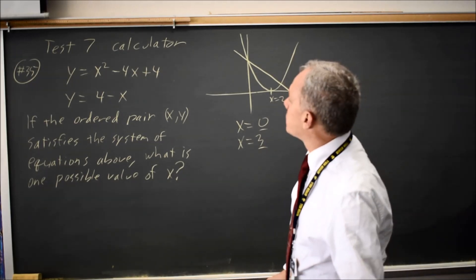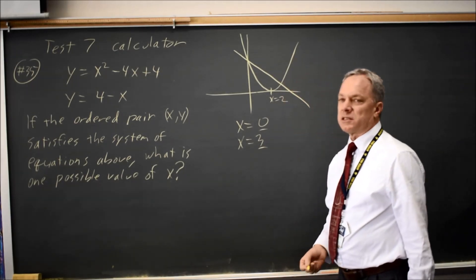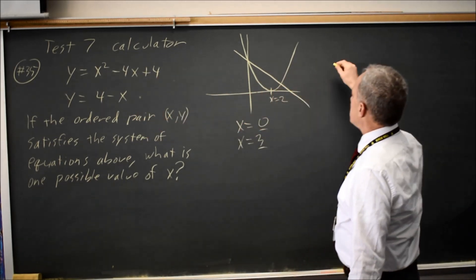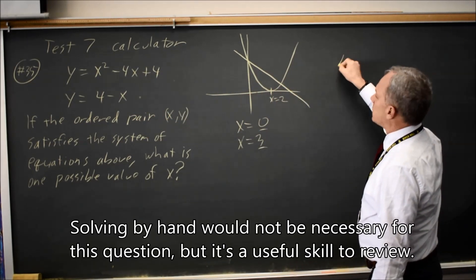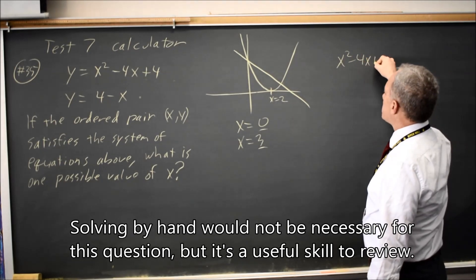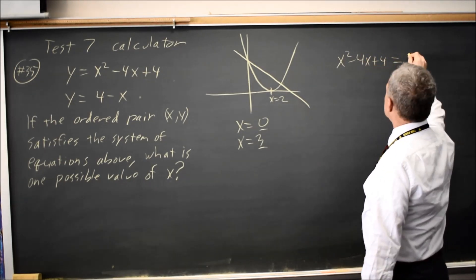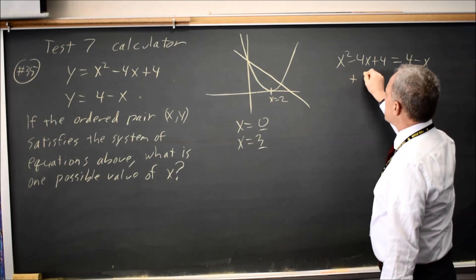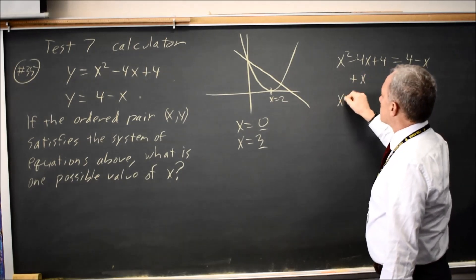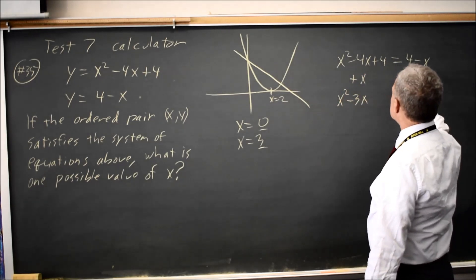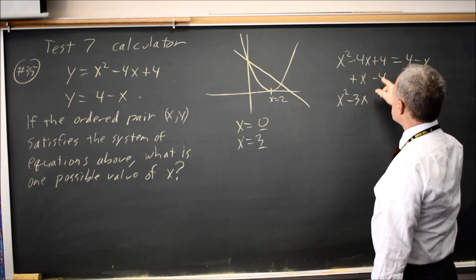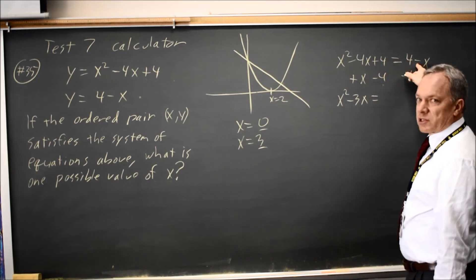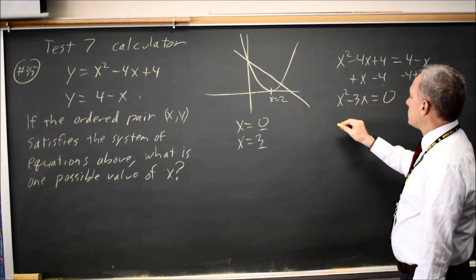If you want to do this by hand, we have two expressions that are equal to y, so we can set them equal to each other: x squared minus 4x plus 4 equals 4 minus x. Add x to both sides to get x squared minus 3x, then subtract 4 from both sides so that 4 minus 4 is 0, giving us 0 on the right.